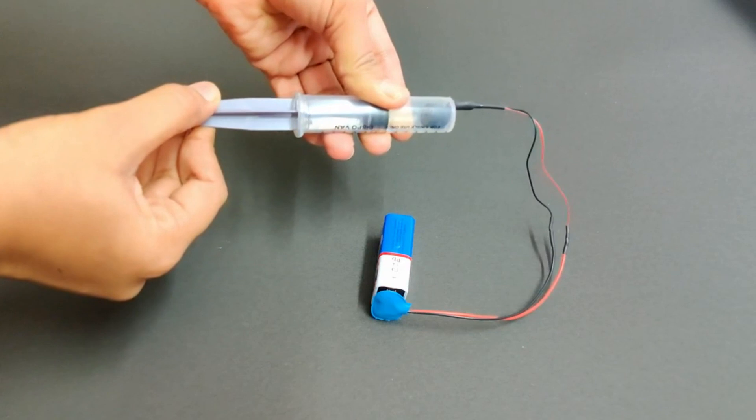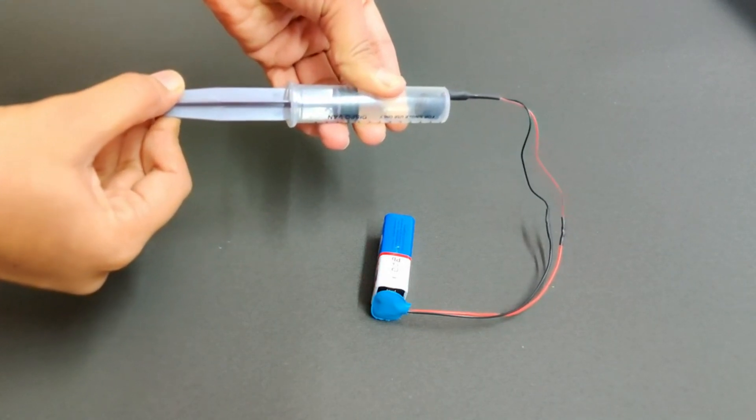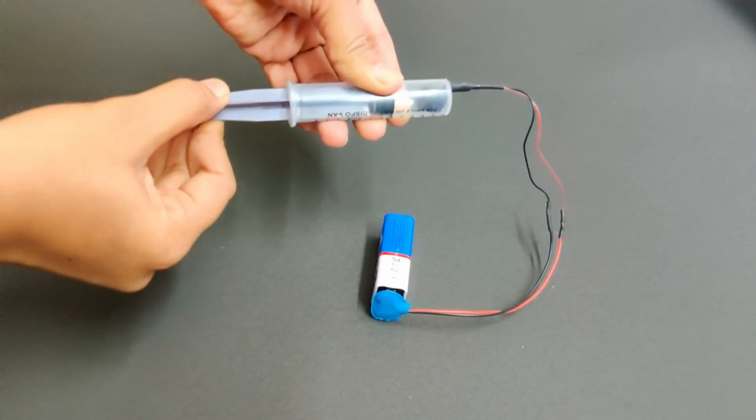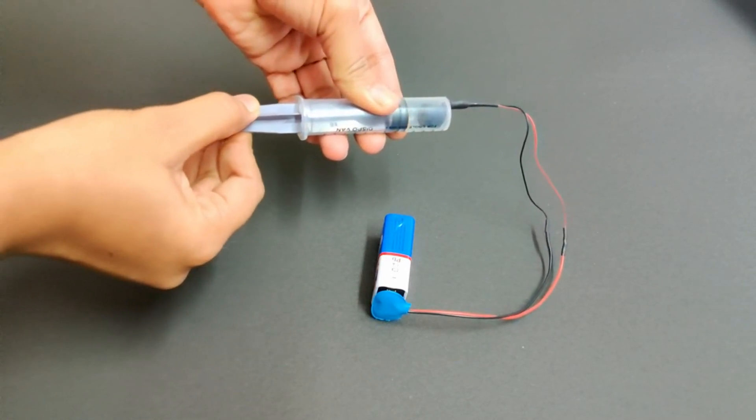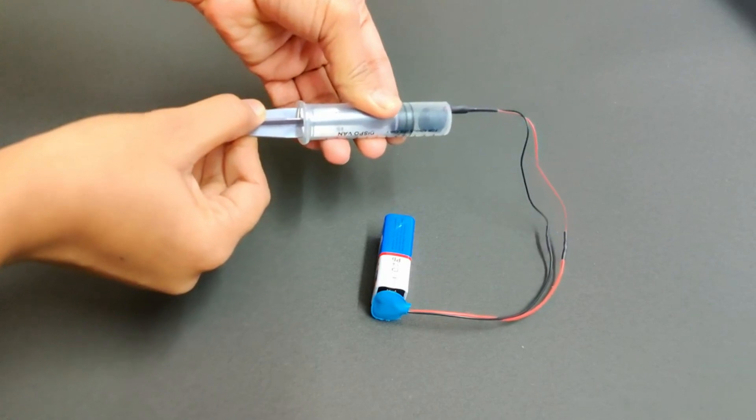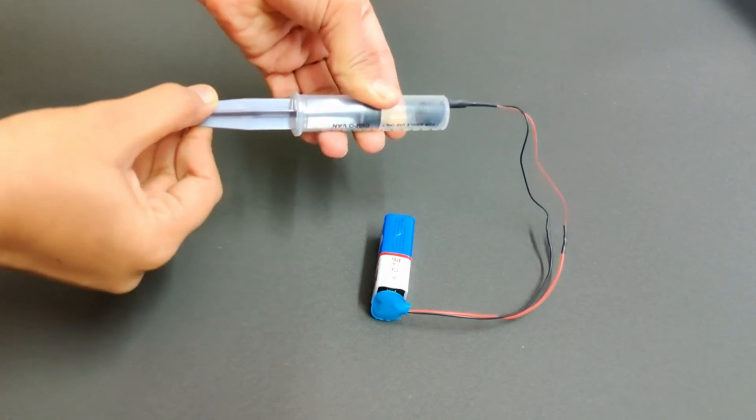The air inside becomes less dense with this increase in volume. As the plunger is pulled out more and more, the air inside becomes less and less dense.